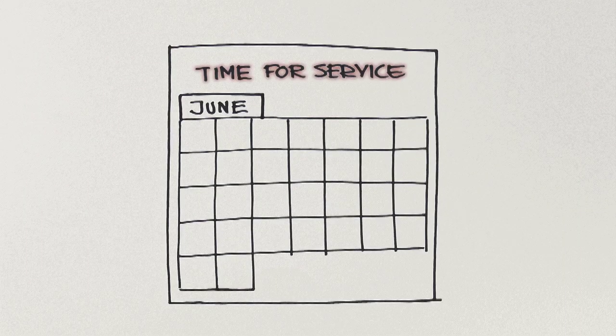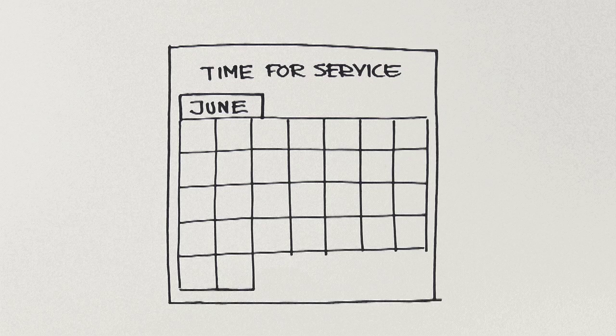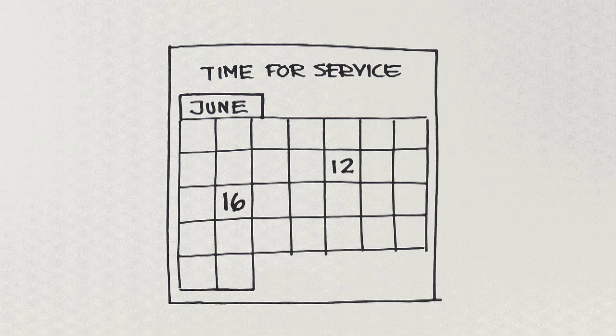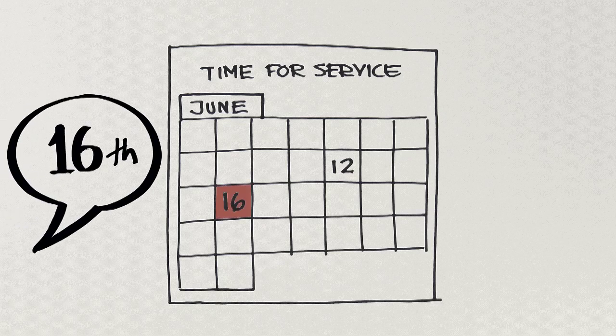When it's time for maintenance, the car reminds you that a service is due and can automatically suggest two vacant time slots at an authorized workshop. June 16 fits nicely, so you book it by a simple voice command as you drive.